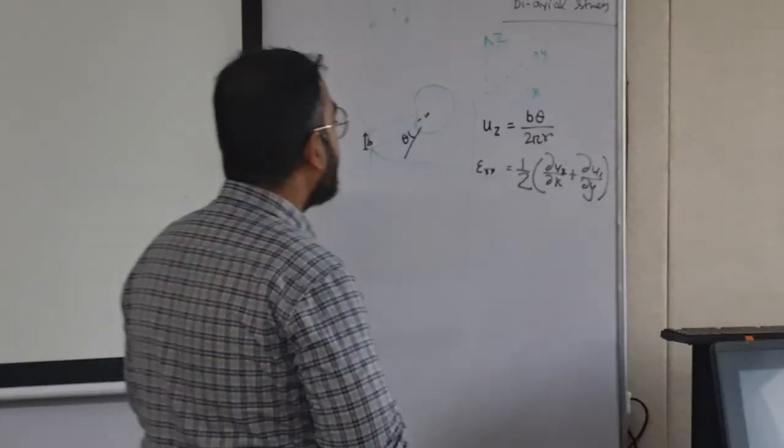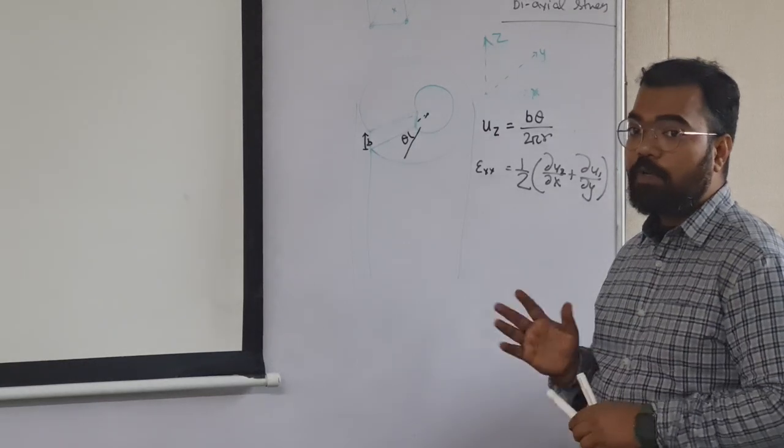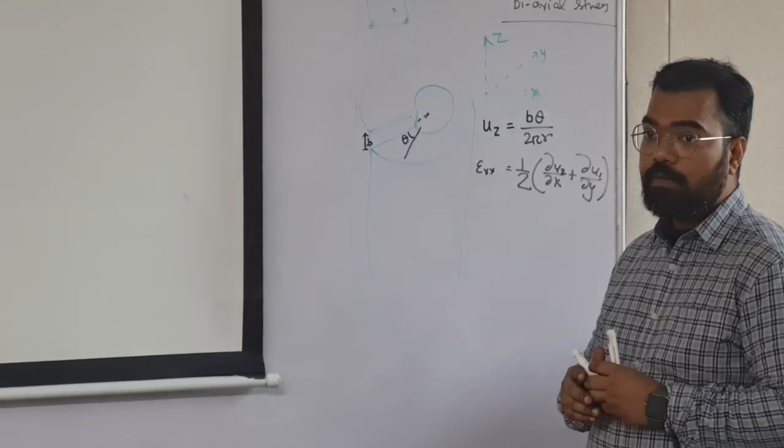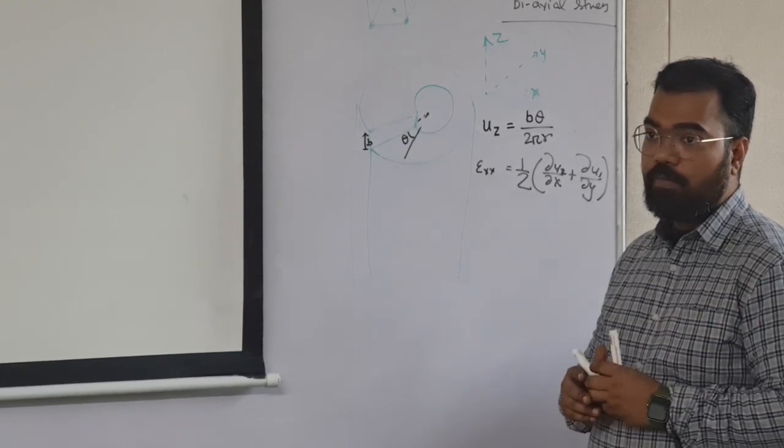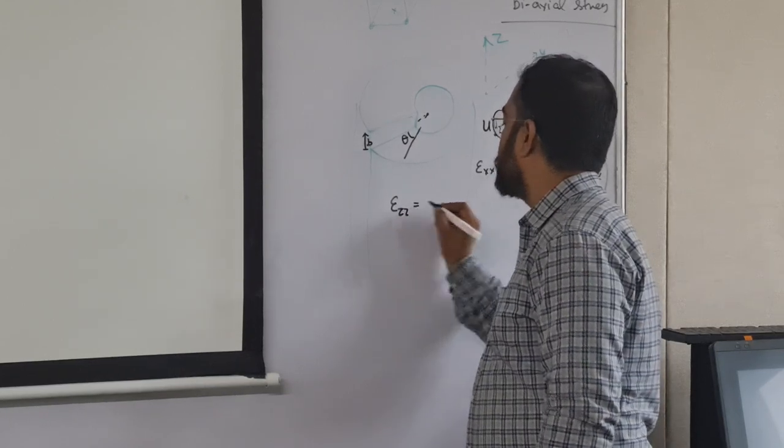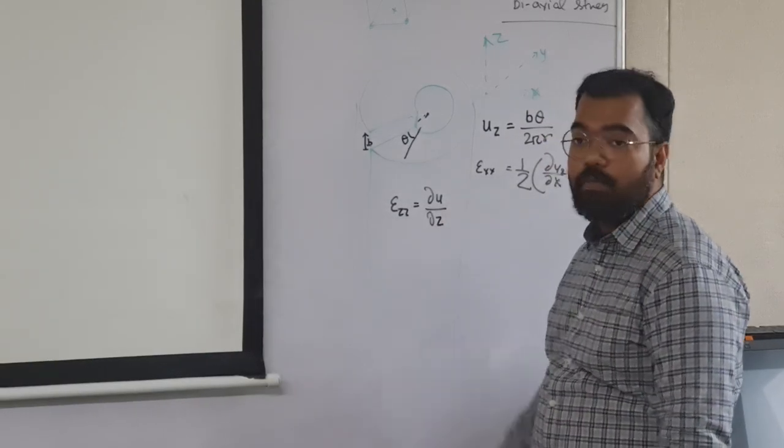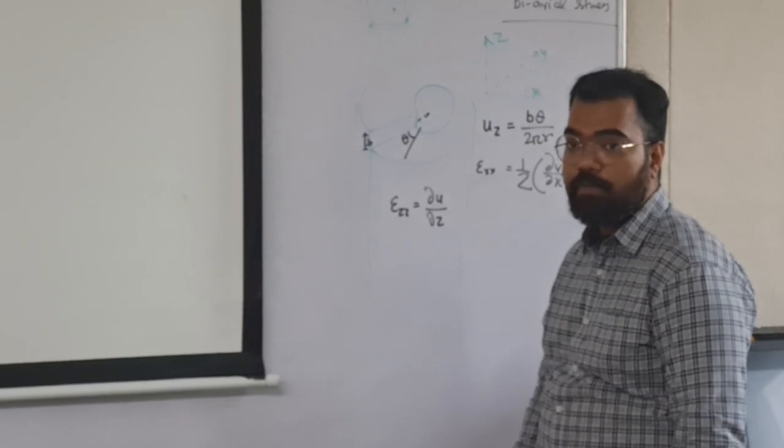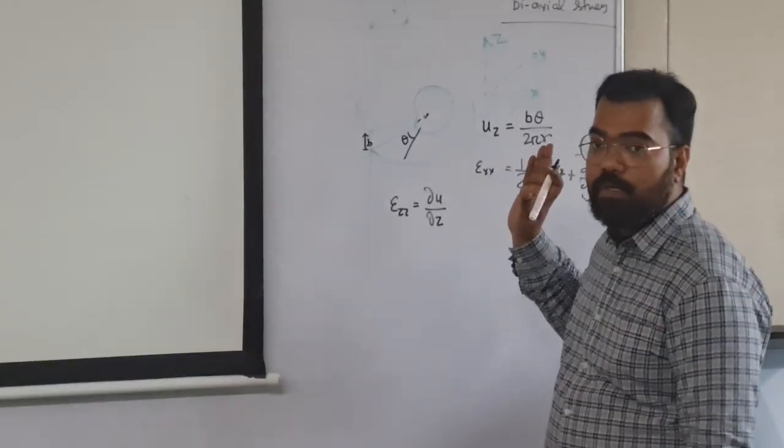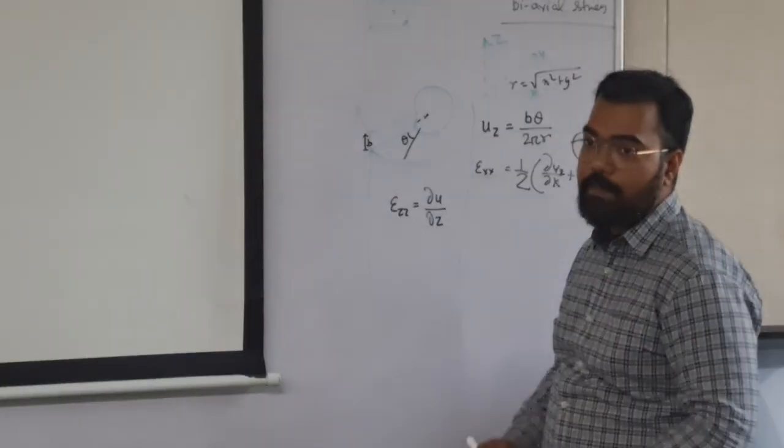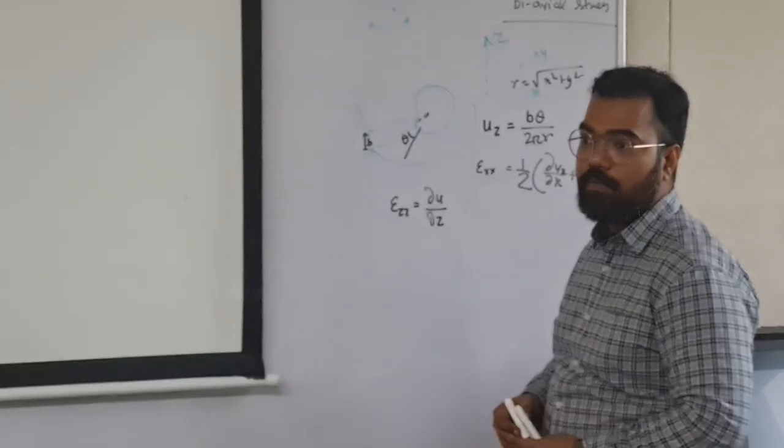So what components of strain will I have? I will not have epsilon xx. I will not have epsilon yy. Will I have epsilon zz? Yeah? How? What will be epsilon zz? Half of del u. Del u by? Del u by del x. Del u by del z. Del z plus. No plus. It is a normal strain. So what is the variation of this in z direction? It is not a function. It is not a function of z. R is equal to root over x square plus y square. There is no z there. So that is also zero.